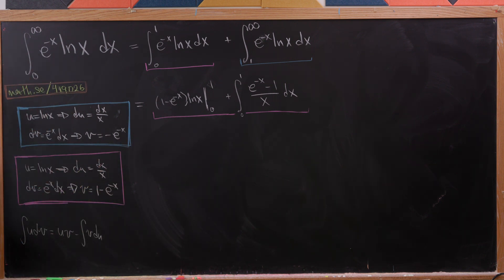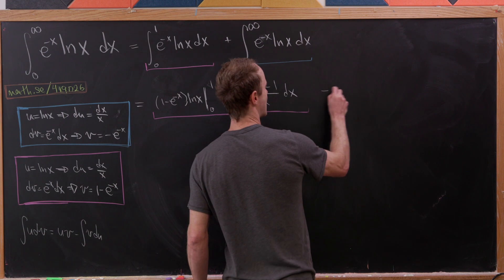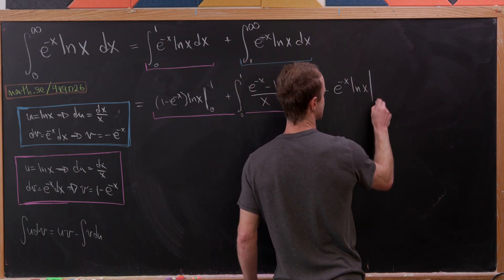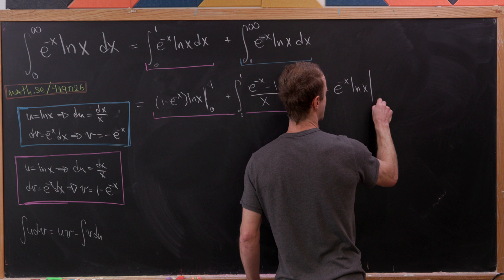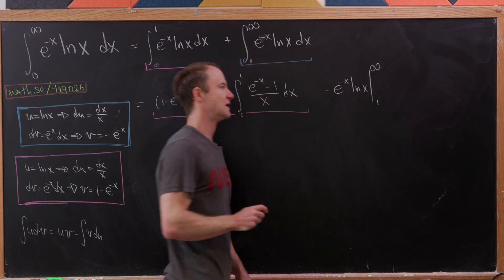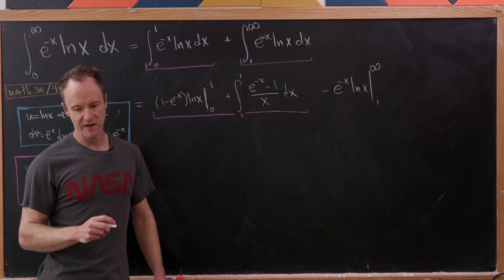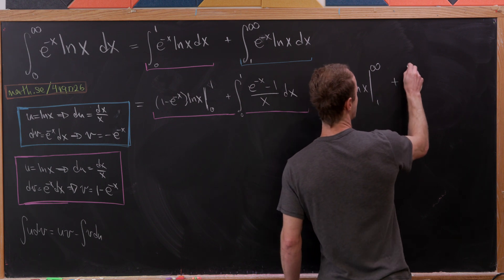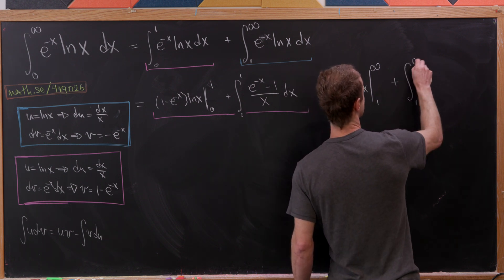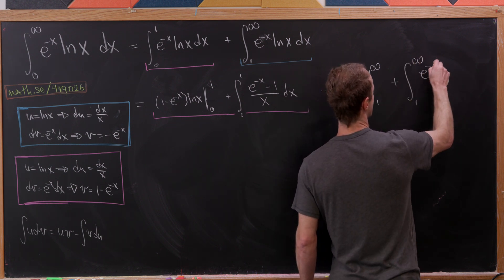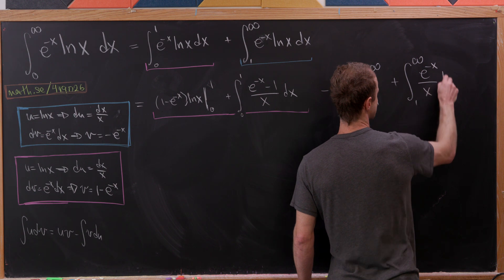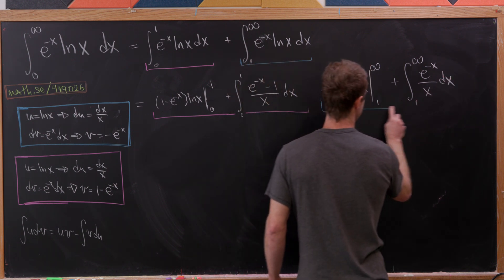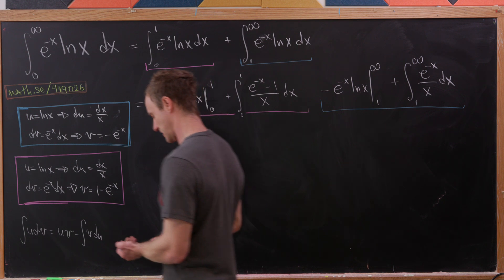For the blue integration by parts, we get minus e to the minus x times the natural log of x, evaluated from one to infinity — where evaluating at infinity means taking a limit — plus the integral from one to infinity of e to the minus x over x, dx. That is our blue integration by parts.